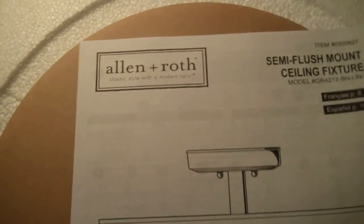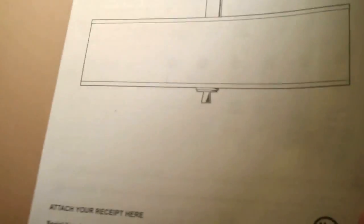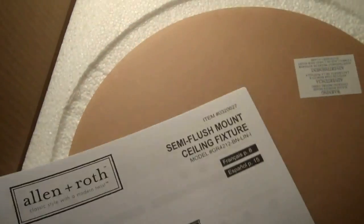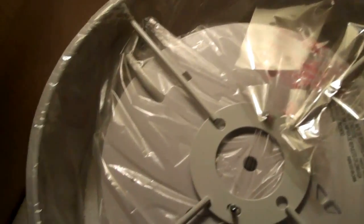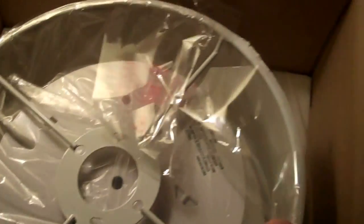It's always important when removing the fixture from the new box to review thoroughly the 24 page instruction manual. Let's check out our new Allen and Ross ceiling mount fixture.